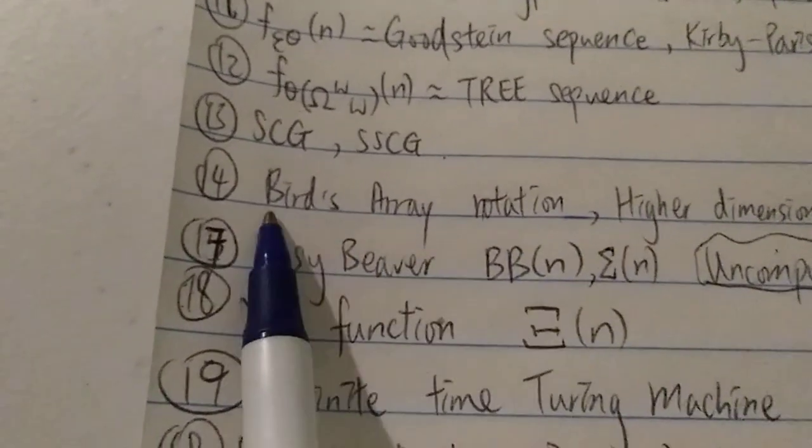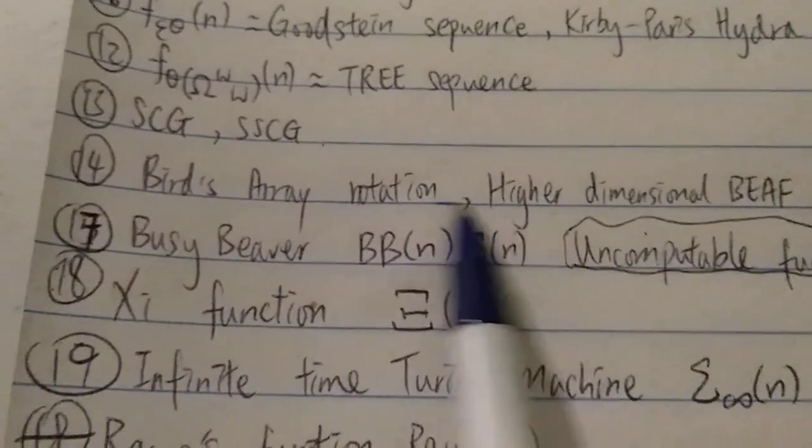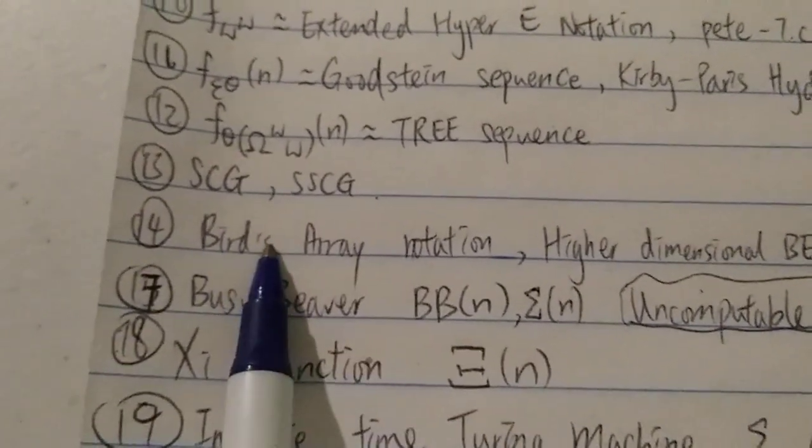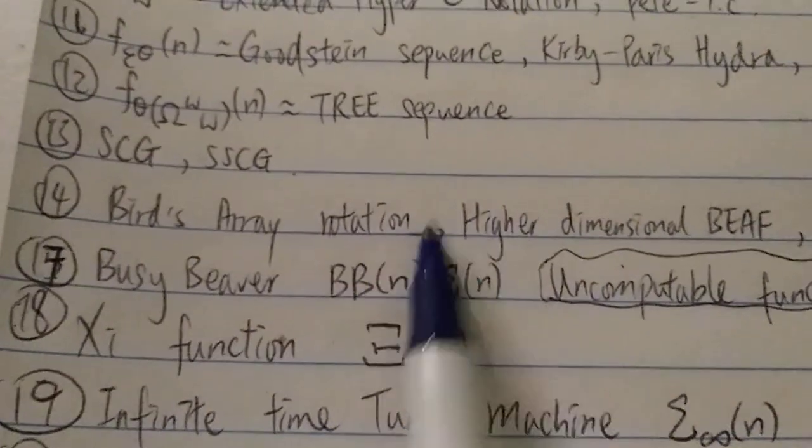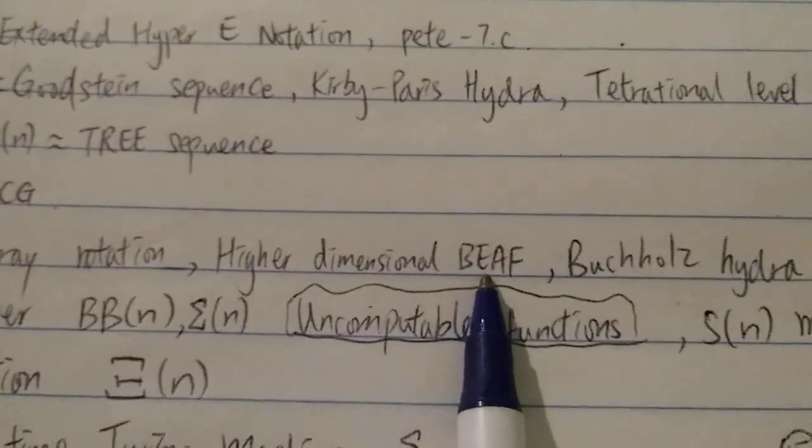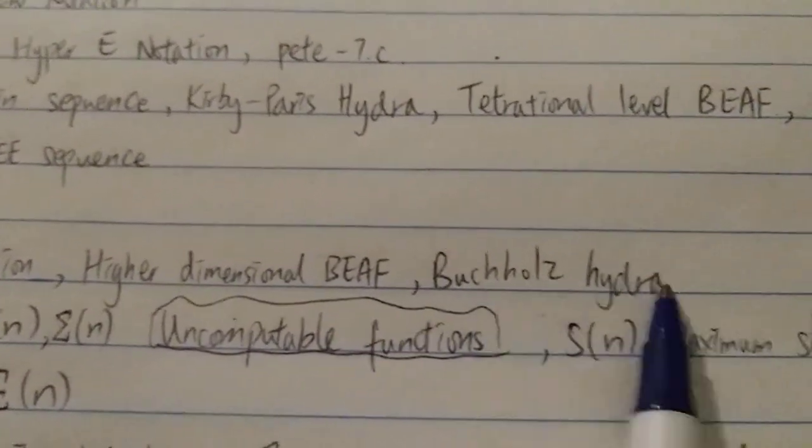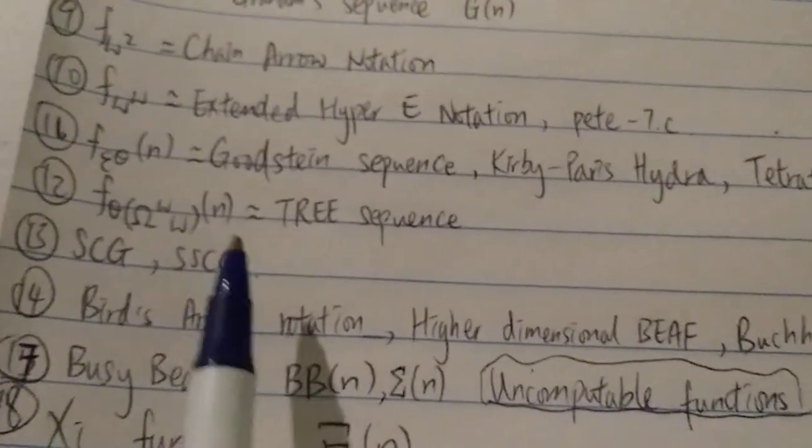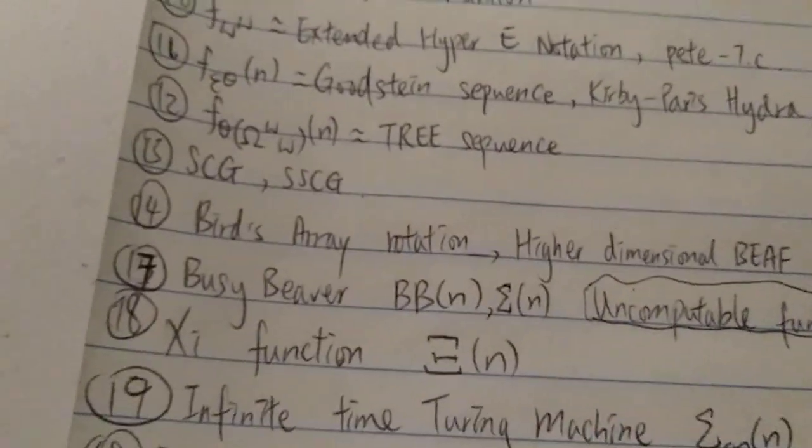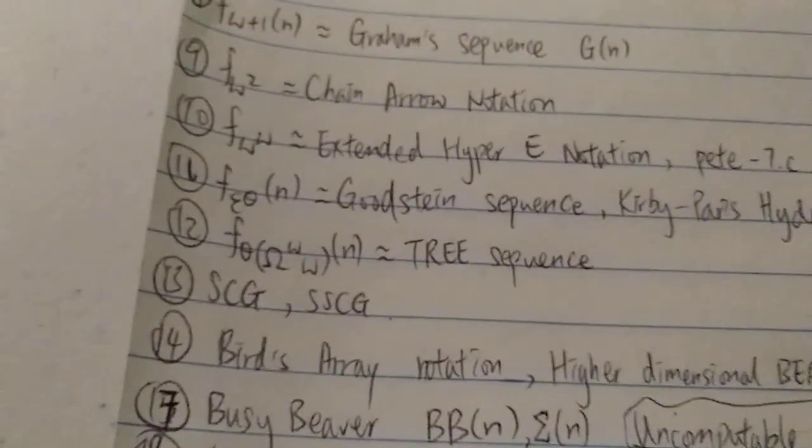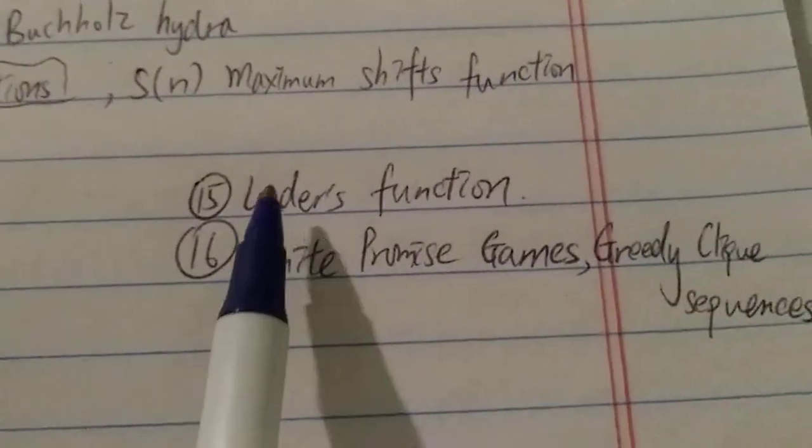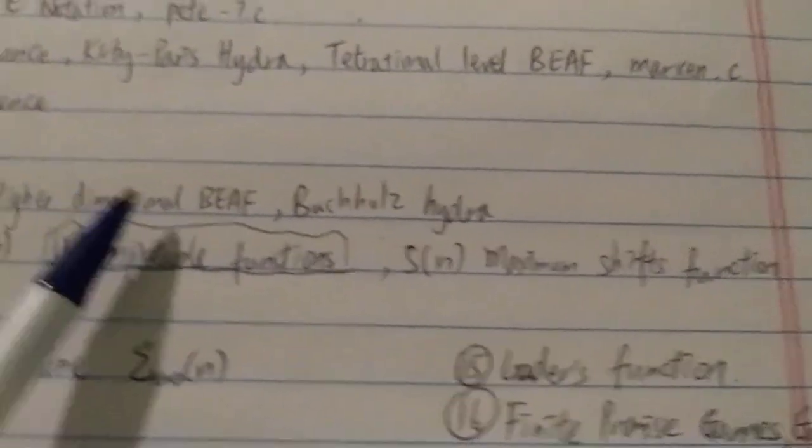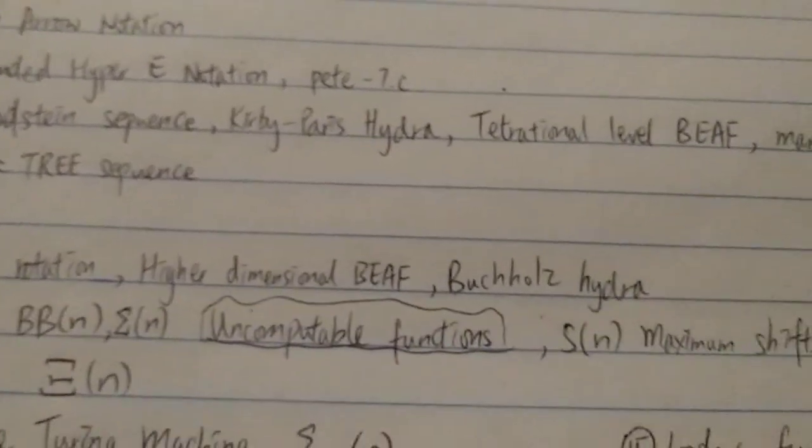And then next, we have the Bird's array notation. I couldn't find the confirmation of this, but I would probably put it in number 14. And then we also have the higher dimensional BEAF and also this hydra over here. These all grow faster than SCG and also the tree sequence. And then at 15, we're actually drums over here. Next, we have the loader's function, which grows even faster than these three over here.